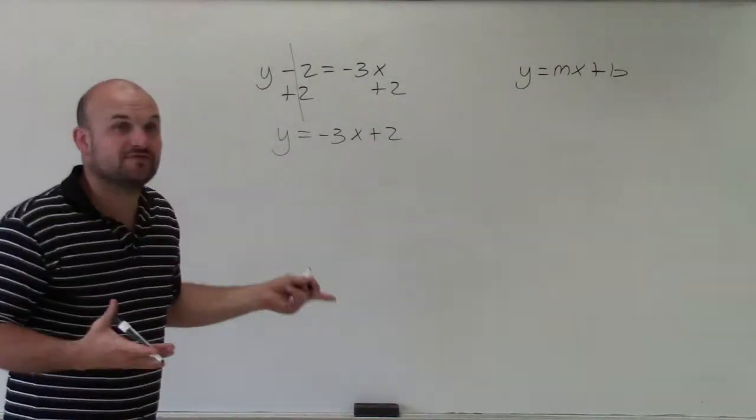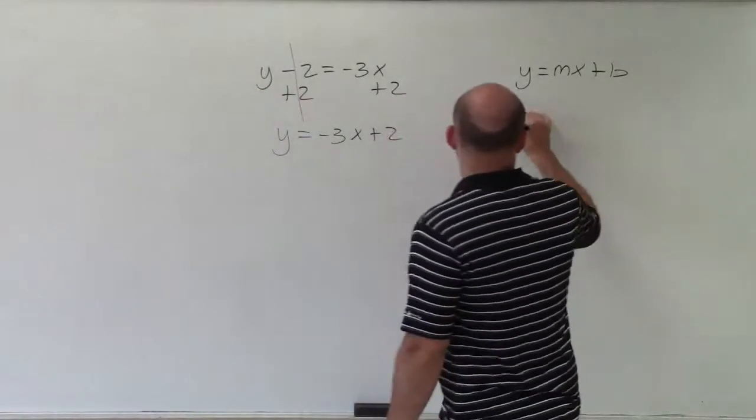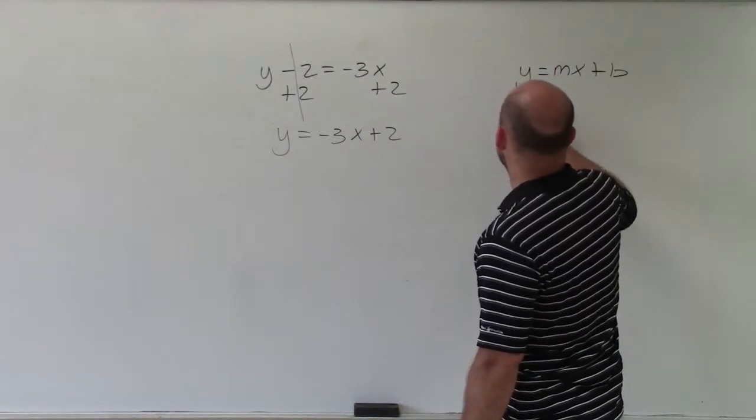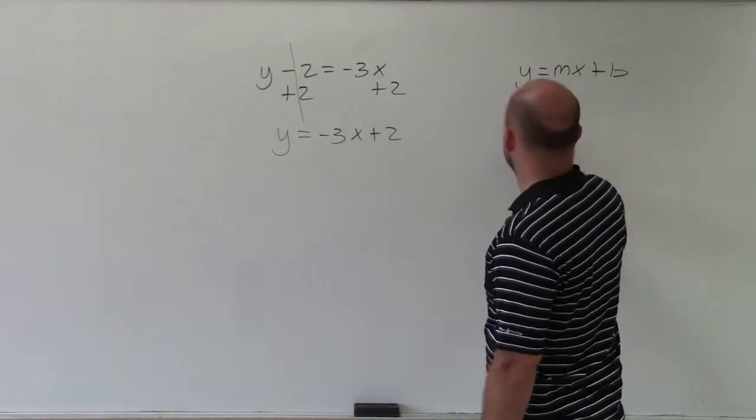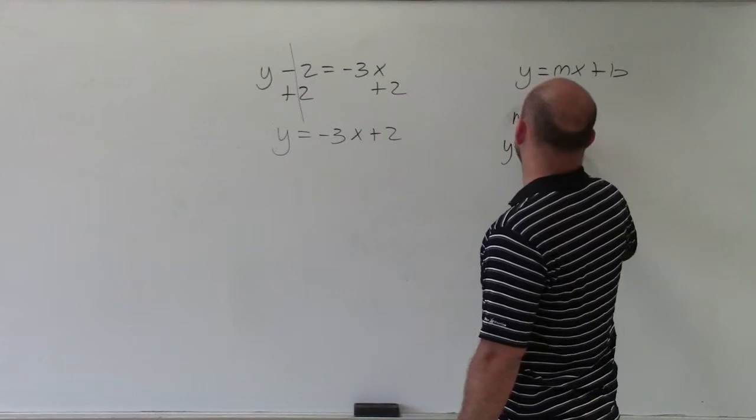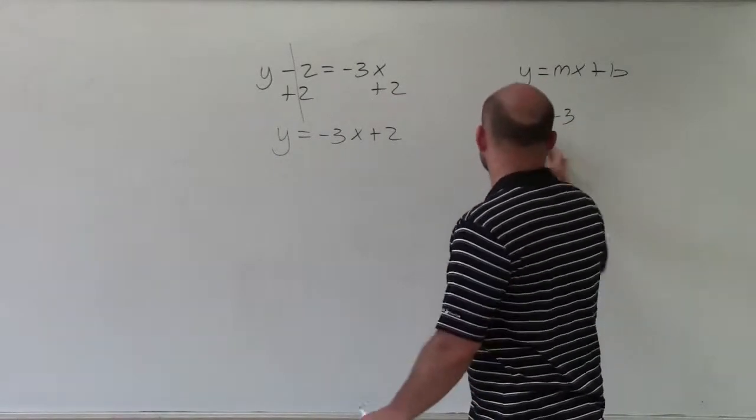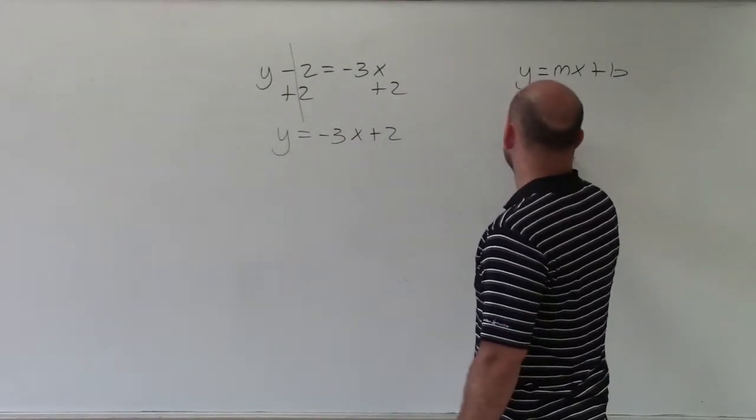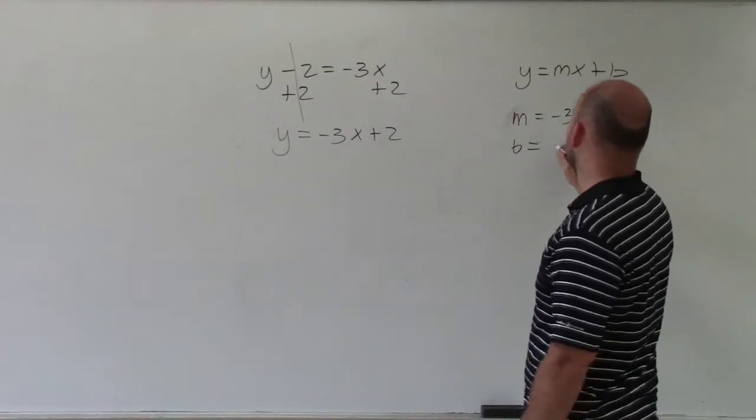And therefore, I have negative 3x plus 2, where I can determine that the slope, which is m, is equal to negative 3. And the y-intercept, which is our b, is equal to 2.